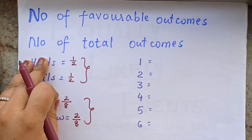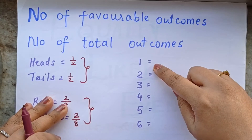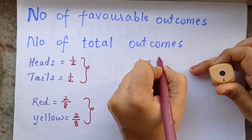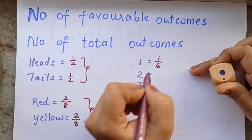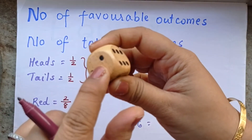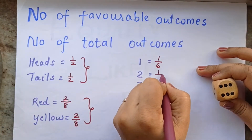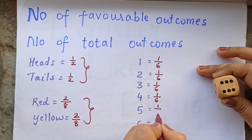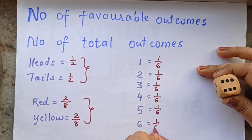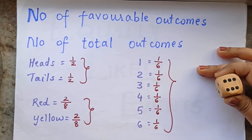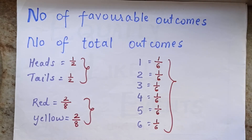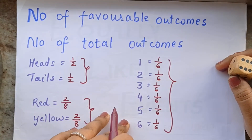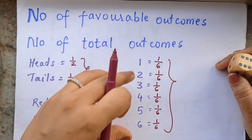Another example is a die. A die has 6 faces, so the probability of getting a 1 is 1/6. The same applies to 2, 3, 4, 5, and 6 — each has a probability of 1/6. Since all outcomes have the same probability, the events of getting any number on a die are called equally likely events.